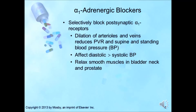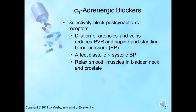The alpha-1 adrenergic receptor blockers act by blocking post-synaptic alpha-1 adrenergic receptors, causing dilatation of the arterioles and veins and reducing peripheral vascular resistance as well as supine and standing blood pressure. These drugs tend to affect diastolic more than systolic blood pressure. They also relax smooth muscles in the bladder neck and prostate, reducing bladder outlet obstruction without affecting bladder contractility.